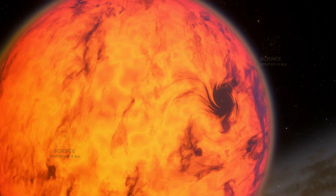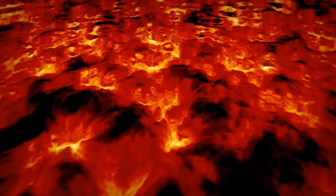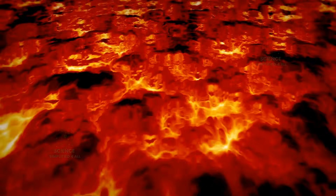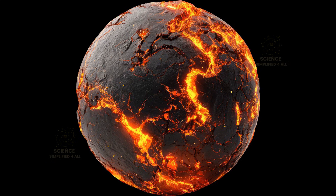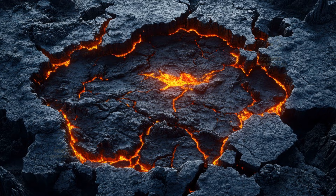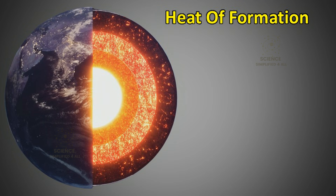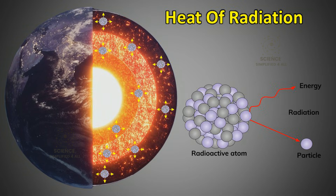When the earth was newly formed, even its outer layers were in a molten condition due to intense heat. As it started cooling down, the outer layers solidified first. Once they became solid, the heat trapped in the inner layers could no longer escape easily. That is why a large portion of the heat from the time earth was formed is still present deep inside its inner layers. In addition, nuclear energy released from radioactive elements within the earth continues to heat its interior even today.